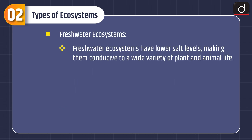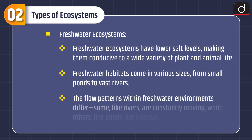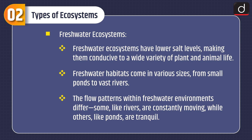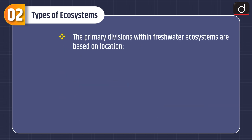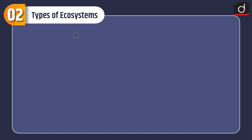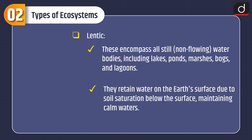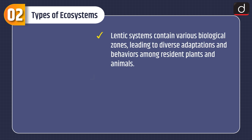Freshwater ecosystems have lower salt levels, making them conducive to a wide variety of plant and animal life. Freshwater habitats come in various sizes, from small ponds to vast rivers. The flow patterns within freshwater environments differ — some like rivers are constantly moving, while others like ponds are tranquil. The primary divisions are: Lotic — water bodies flowing in one direction such as rivers and streams; and Lentic — all still, non-flowing water bodies including lakes, ponds, marshes, bogs and lagoons, retaining water due to soil saturation and maintaining calm waters.